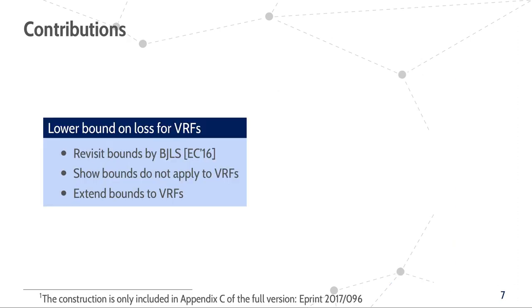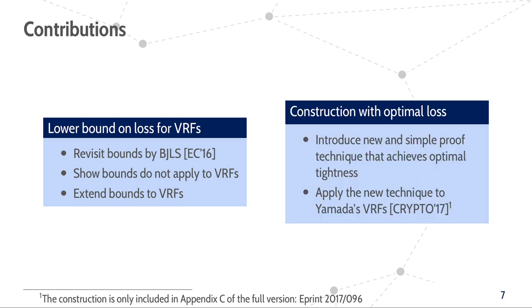In terms of contribution, this paper revisits the lower bounds on the loss of public key cryptography from EuroCrypt 2016 by Bader et al. and extends them to VRFs. Furthermore, it also introduces the first construction of a VRF that can be proven secure with this optimal security loss. The construction is based on the VRF by Yamada from Crypto 2017.